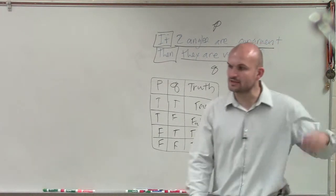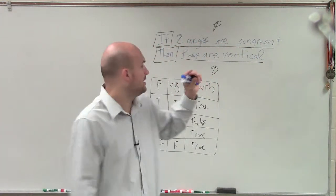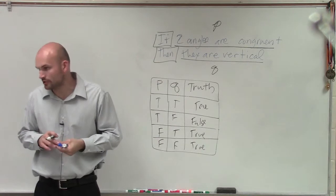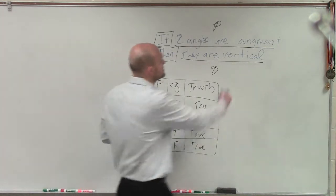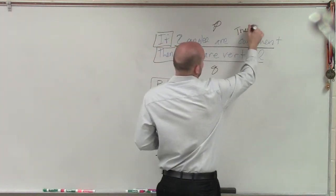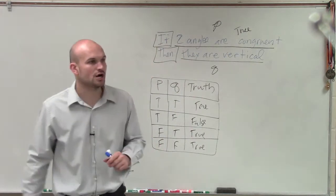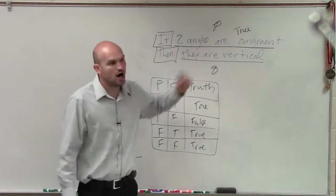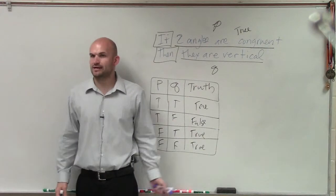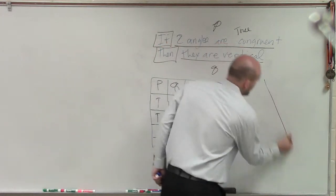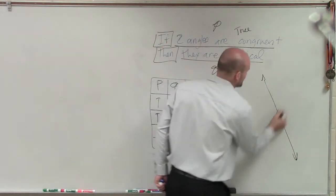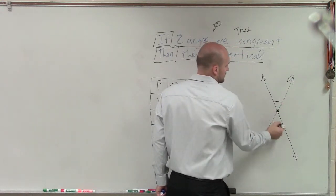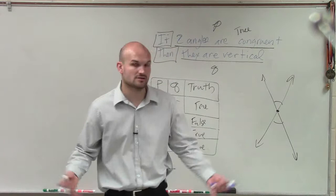Now let's take a look at this and see what it says. It says: two angles are congruent. Is it possible for us to have two angles that are congruent? Let's pretend we have two angles that are congruent. Then it says they are vertical angles. Remember, we talked about vertical angles — vertical angles come from the intersection of two lines.